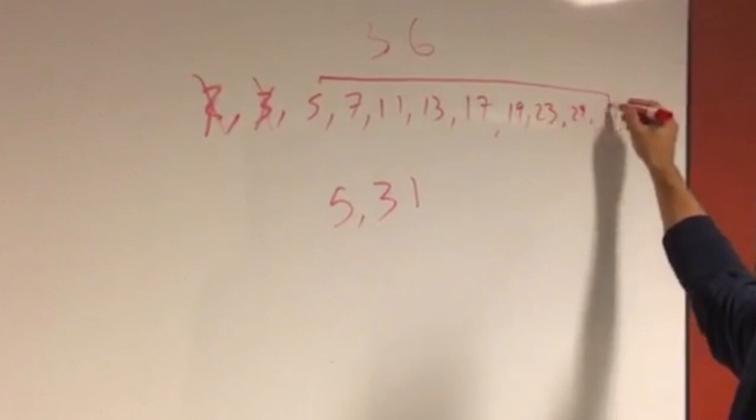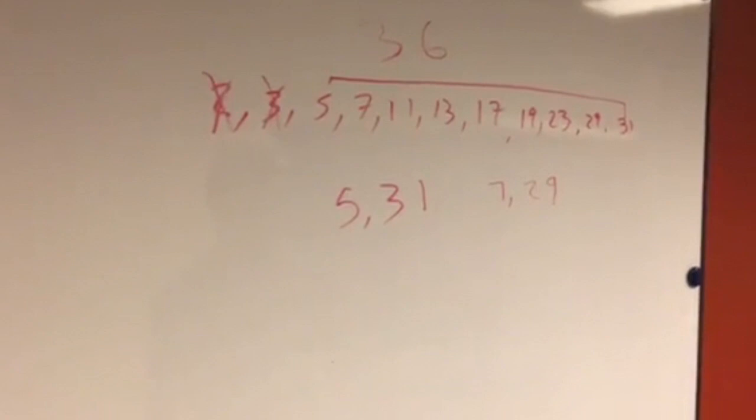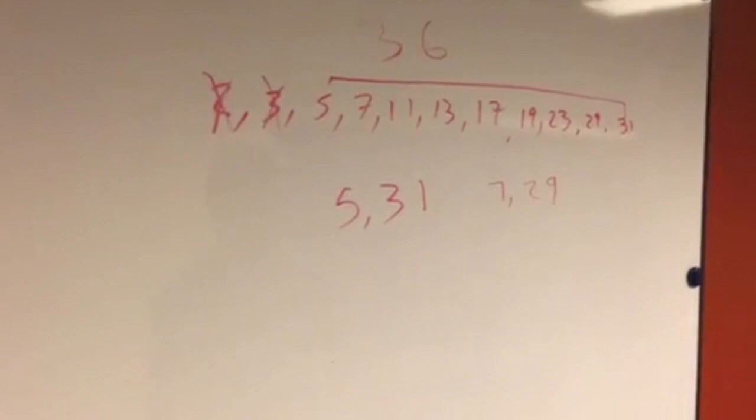And then, seven and twenty-nine work as well. So, that is another pair of two prime numbers whose sum adds up to thirty-six.